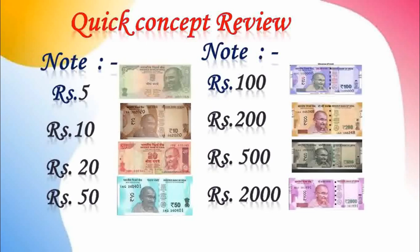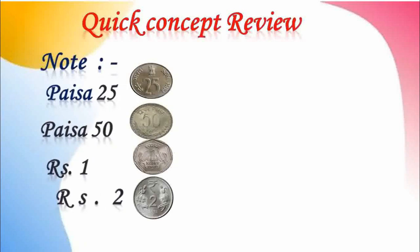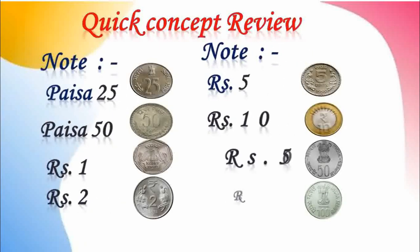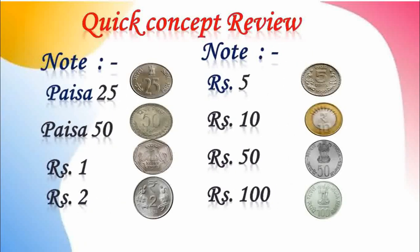Coins of Rupees 1 and 2 are more in number. See here how coins can be seen: 25 Paise, 50 Paise, Rupees 1, Rupees 2, Rupees 5, Rupees 10, Rupees 50, and Rupees 100 can also be seen in the form of coins.